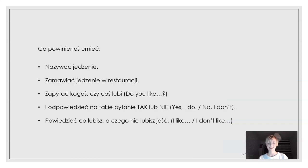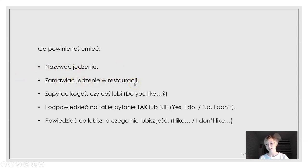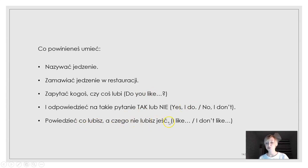Dzieciaki, to powinniście umieć z tego całego rozdziału: nazywać jedzenie; zamawiać jedzenie w restauracji — hello, good morning, sit down please, can I have some pasta?; zapytać kogoś czy coś lubi — do you like?; odpowiedzieć na to pytanie — yes, I do, albo no, I don't; powiedzieć co lubicie a czego nie lubicie jeść — na przykład I like bananas, I don't like banana soup.